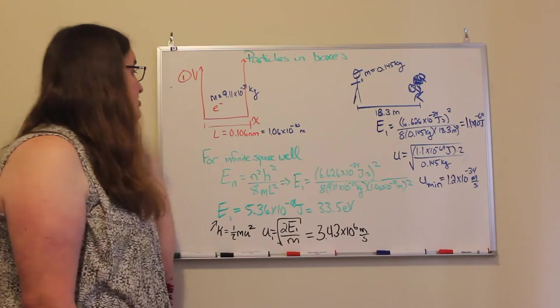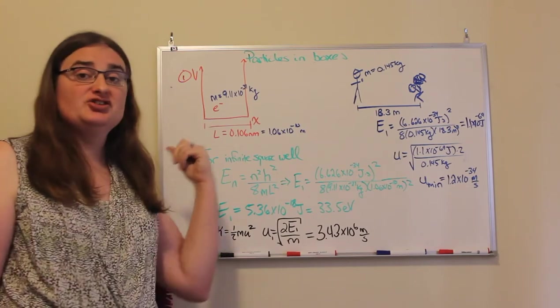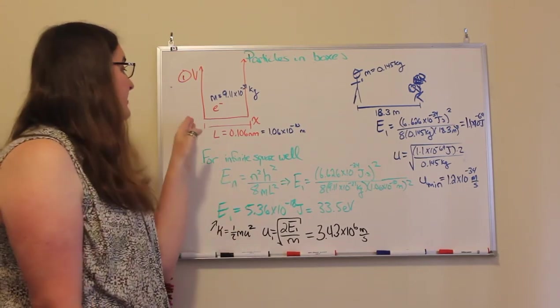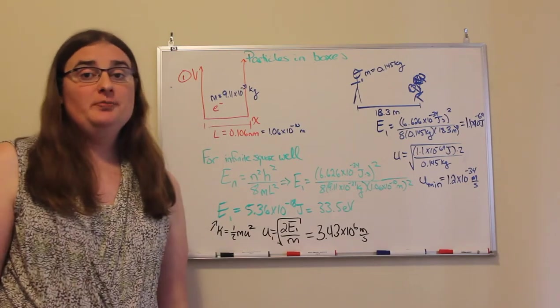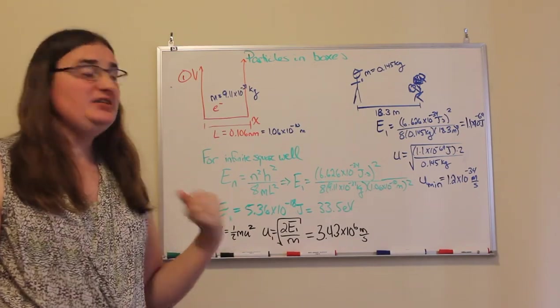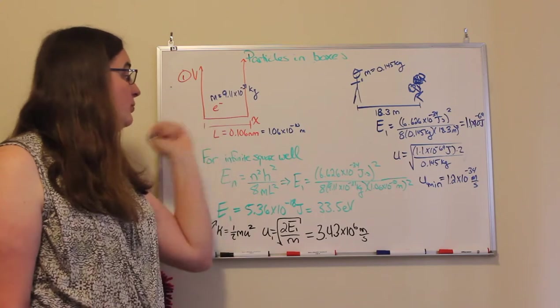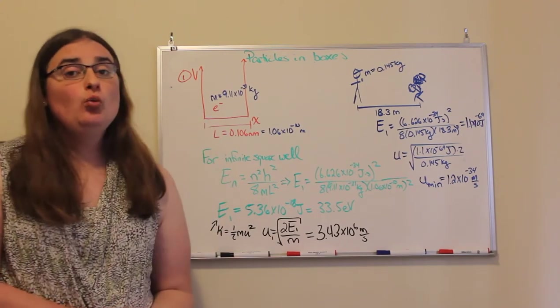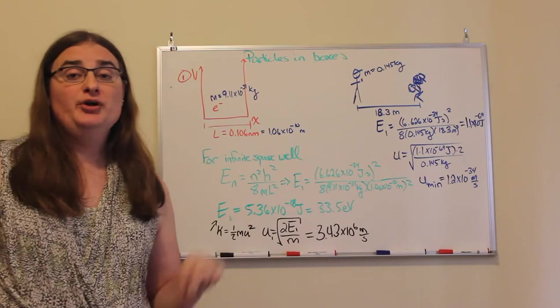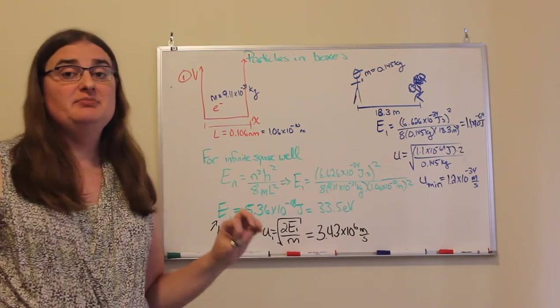So the first system: we have an electron that is trapped in an infinite square well. That means outside the region where the particle is, there'd be an infinite potential energy, and the region is 0.106 nanometers across, which is 1.06 times 10 to the negative 10 meters.